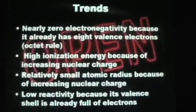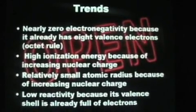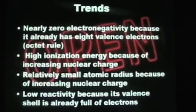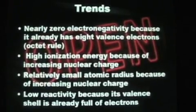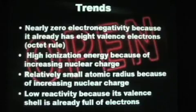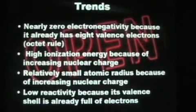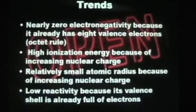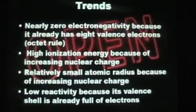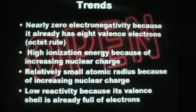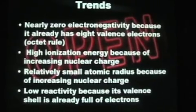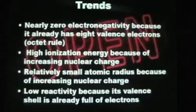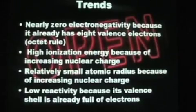And now for its trends. Nearly zero electronegativity because it already has eight valence electrons and it follows the octet rule. It has high ionization energy because of increasing nuclear charge and a relatively small atomic radius, also because of increasing nuclear charge. Neon has low reactivity because it has eight valence electrons and its valence shell is full.